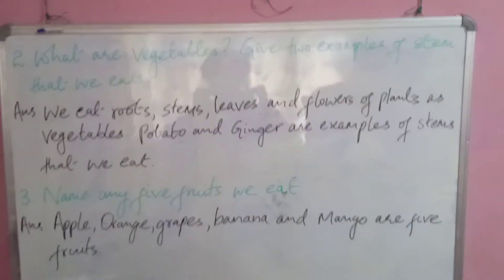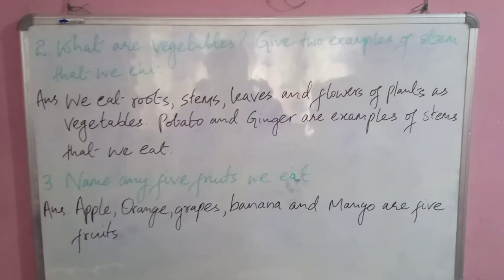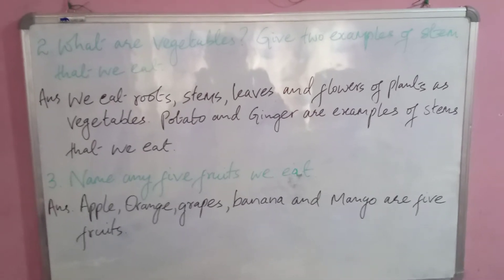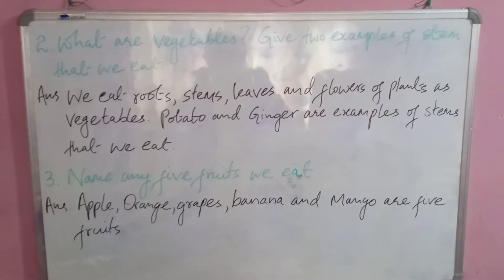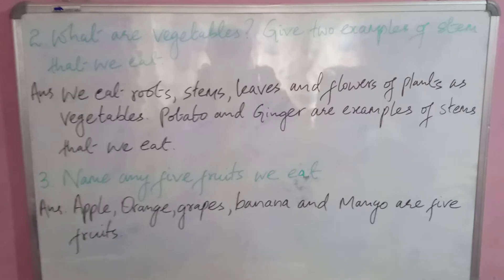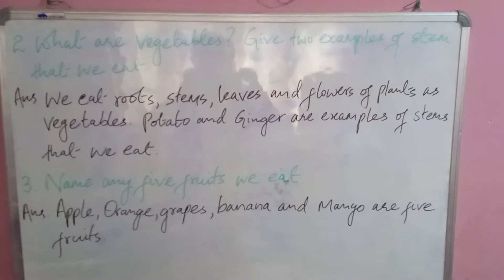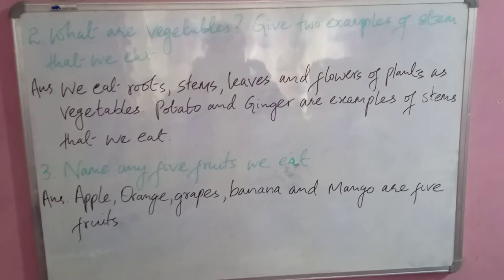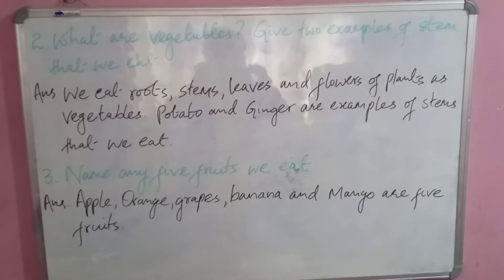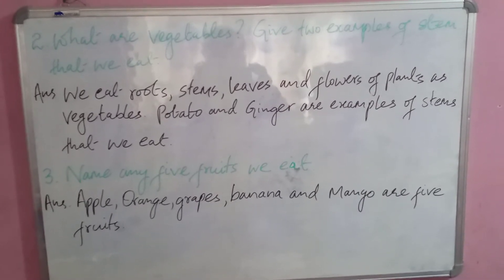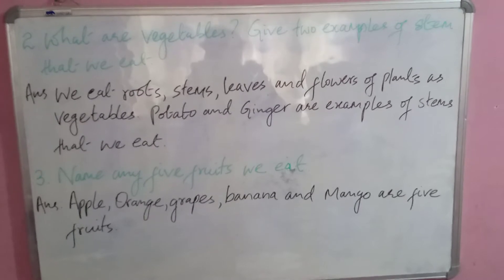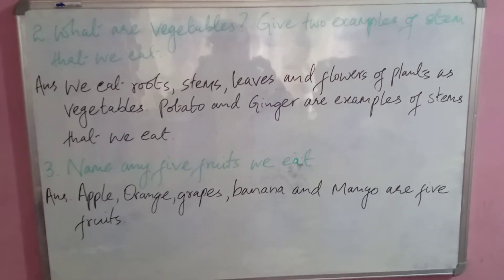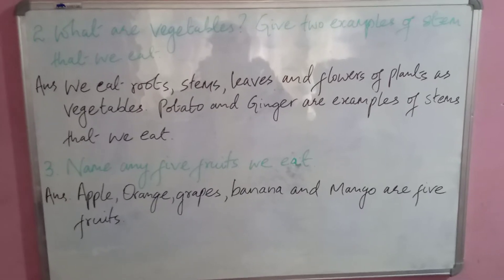Question number two: what are vegetables? Give two examples of stems that we eat. Write: we eat roots, stems, leaves, and flowers of plants as vegetables. Potato and ginger are examples of stems that we eat.